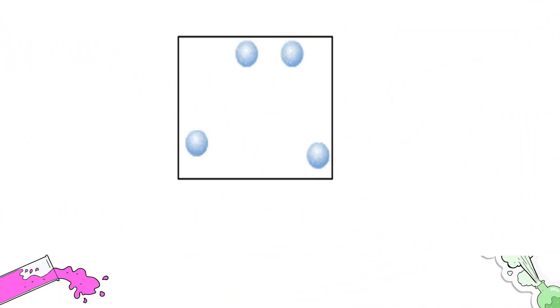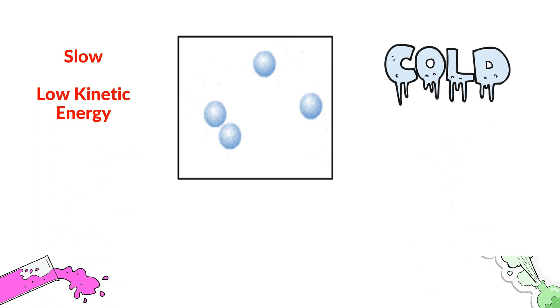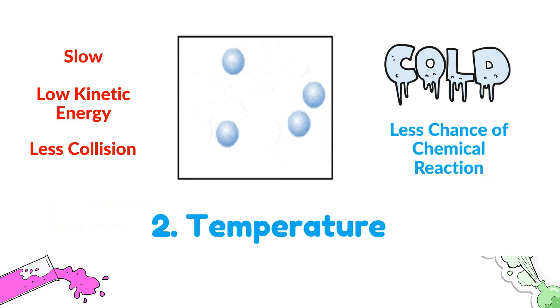Next, we observe slow-moving particles. And since they are slow-moving, they have a low energy, or to be particular, a low kinetic energy. And this low kinetic energy can only be observed during cold or low temperatures. Moving this slowly, during this cold temperature, we can see less collisions occurring, thus leading to less chance of chemical reactions.